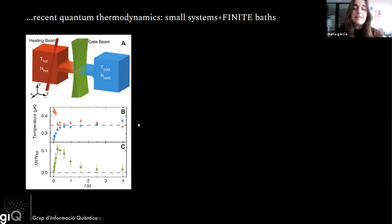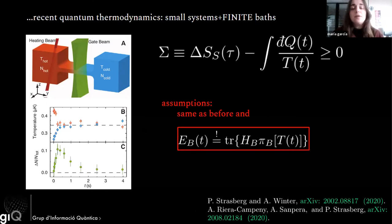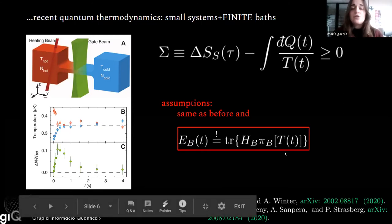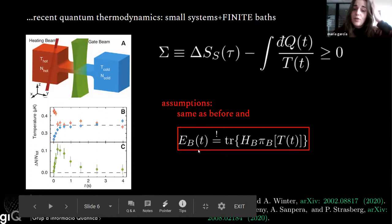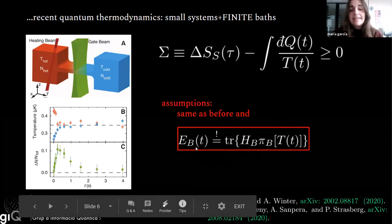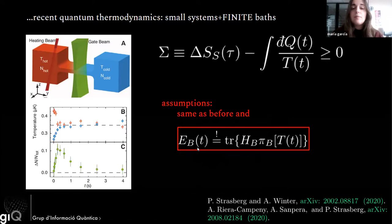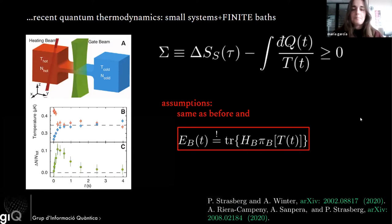The good news is that even in this case it is possible to re-derive the Clausius inequality and the second law. The assumptions are the same as before, plus one extra important assumption: we need to fix what time-dependent temperature T(t) to use in this integral. To find it, we impose that the mean energy of your bath is the same as the mean energy it would have in the hypothetical case that it had been in equilibrium. So we are not imposing that our bath is in equilibrium — only that its energy behaves as if it were in equilibrium. You solve this equation and then find the function T(t) to plug in.